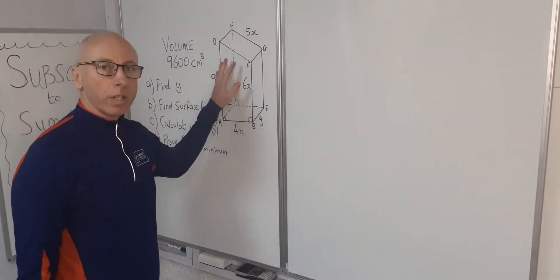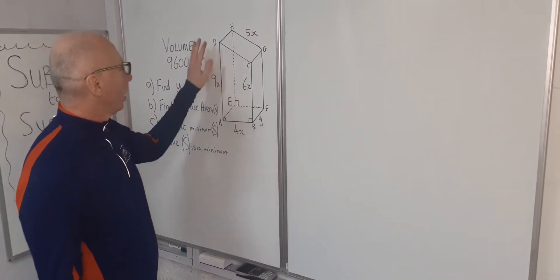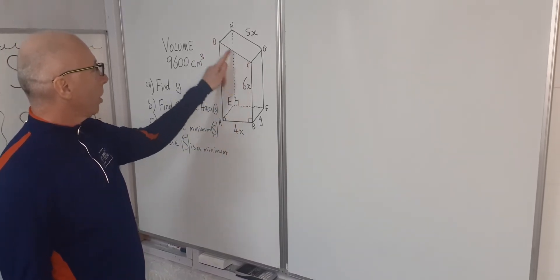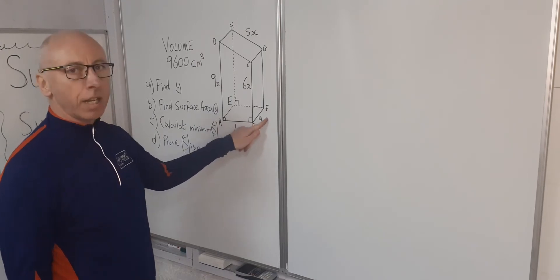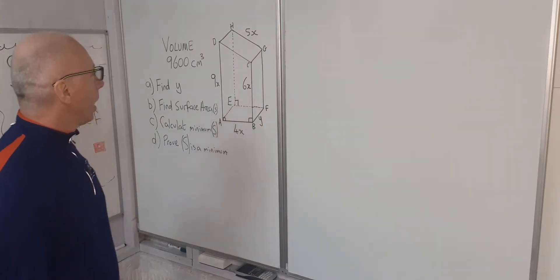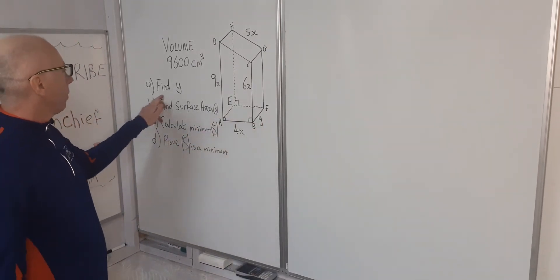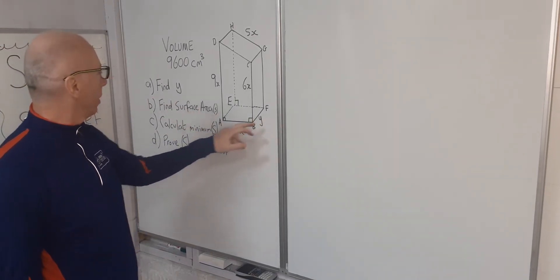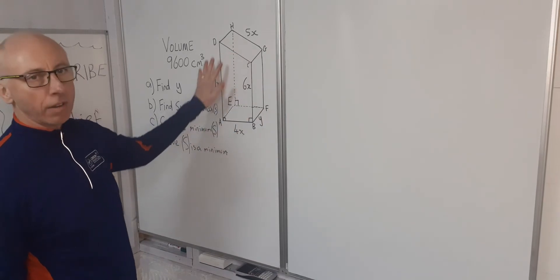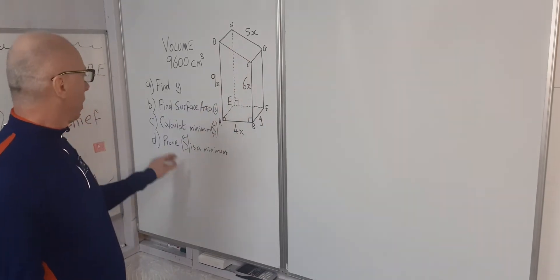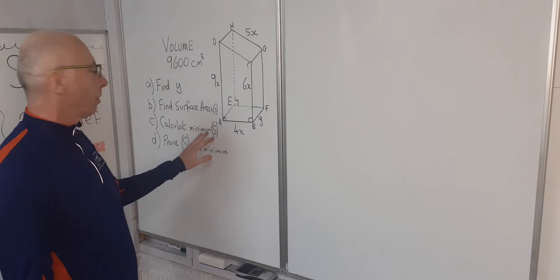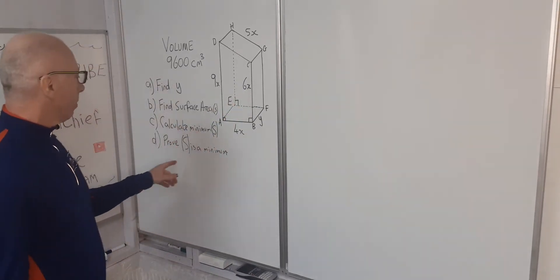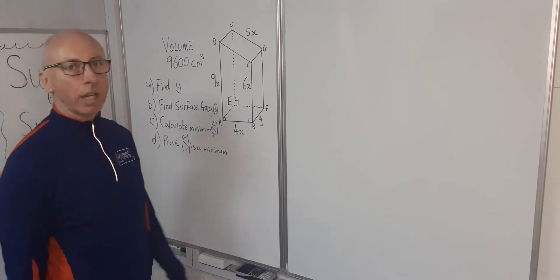We've got a question revolving around a three-dimensional shape — a prism of some description. It has a trapezium face, the depth is y, and we're looking to find y in terms of x. Then we're looking to find the surface area of all the faces, calculate the minimum value of the surface area, and prove that the surface area we calculate is indeed a minimum.